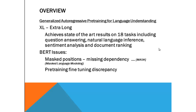XLNet achieved state-of-the-art results on 18 tasks which include question answering, natural language inference, sentiment analysis, document rating, and more. BERT also performed well on these, but XLNet has performed better. XLNet integrates ideas from Transformer-XL, the state-of-the-art autoregressive model, into its pre-training.